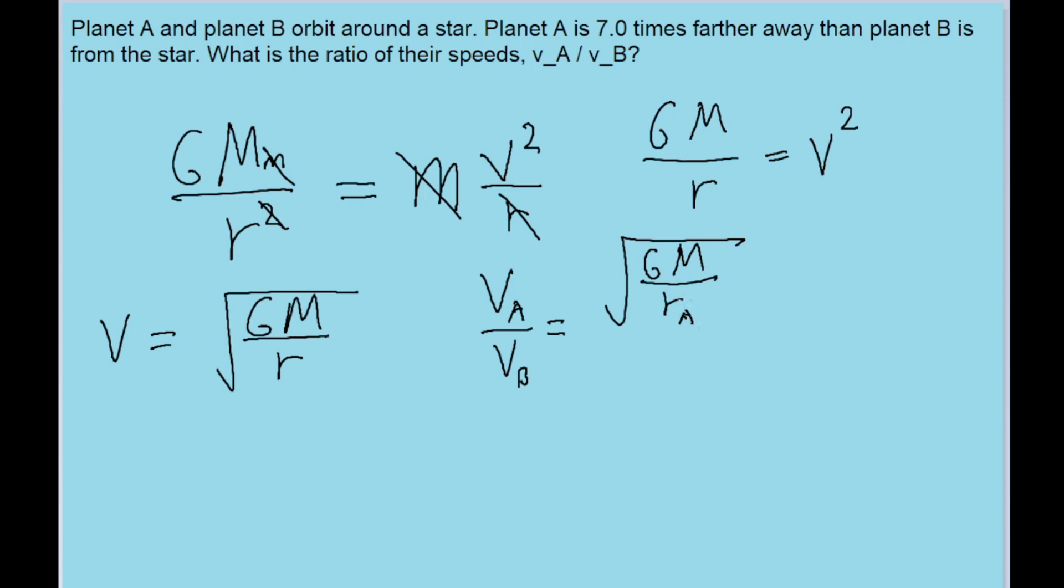So I'm going to use R sub A to refer to the distance between planet A and the star, and then for V sub B, I'm going to use R sub B to refer to the distance between planet B and the star. So in this ratio here,